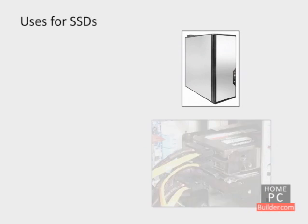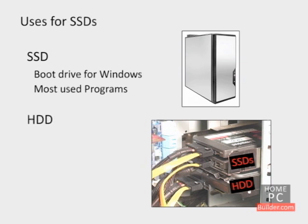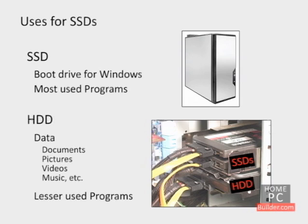On a desktop computer, you can use both hard drives and SSDs. The ideal setup is to have an SSD as your boot drive where you install Windows and the majority of your programs, and a hard drive for your data and lesser-used programs. Having Windows and your most-used programs on the SSD gives you an extremely responsive experience. Your data — personal and work documents, pictures, videos, music, etc. — all plays fine from a hard drive, or is small enough that the slower speed makes no noticeable difference.